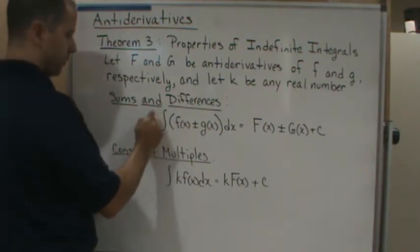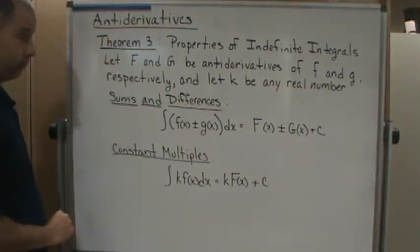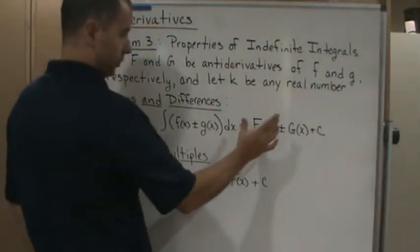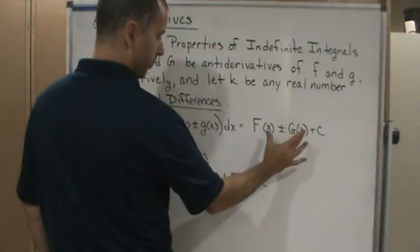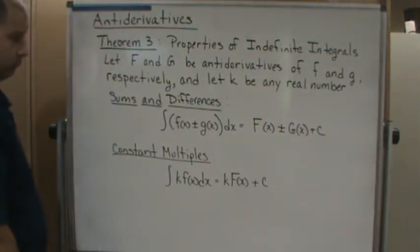The sum and difference property: the integral of the sum or difference of two functions is equal to the sum and difference of their individual antiderivatives plus C.